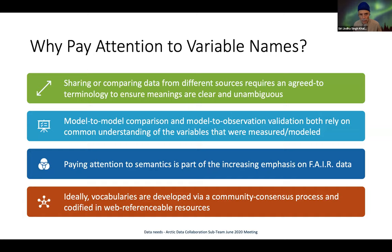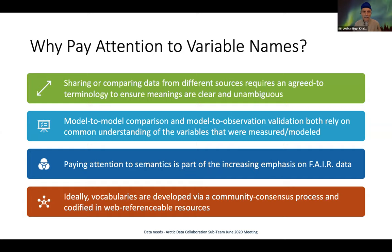Sharing or comparing data from different sources requires agreed-upon terminology to ensure that meanings are clear and unambiguous. Model-to-model comparisons and model-observation validation both rely on a common understanding of variables. Ideally, the vocabularies used to represent measured variables need to be developed through a community consensus process and codified as referenceable web URIs — we're not there yet, but that's the ideal.